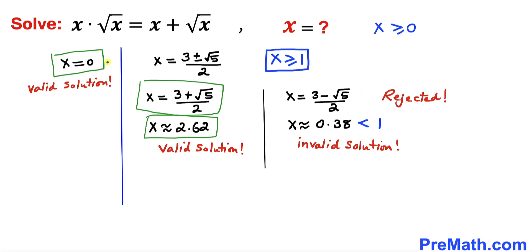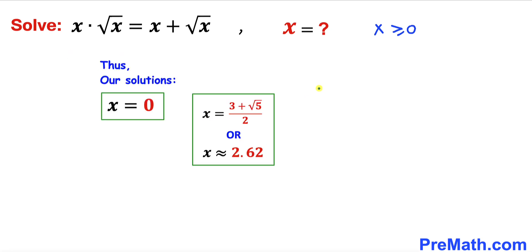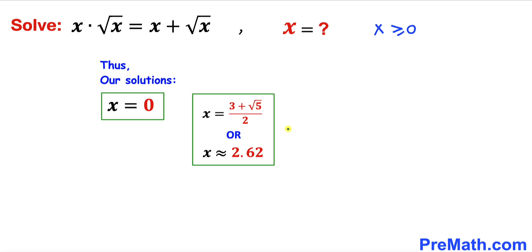Our only valid solutions are x equal to 0 and x equals (3 plus square root of 5) divided by 2, which is approximately equal to 2.62. That's our final answer.